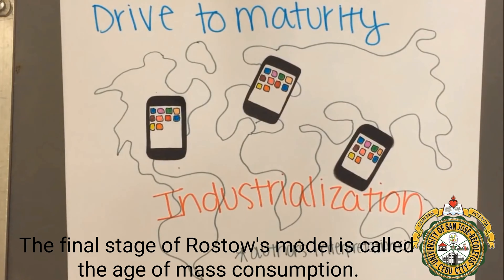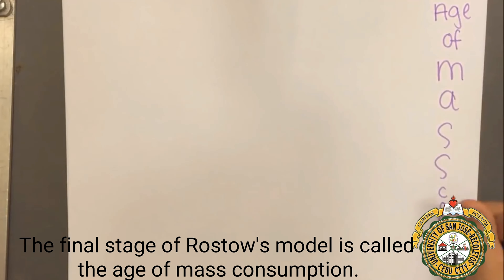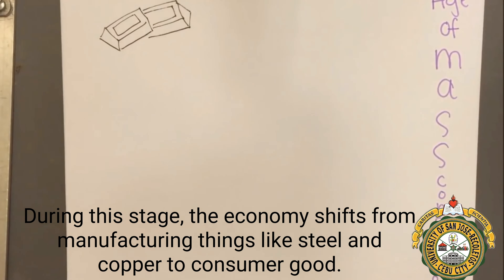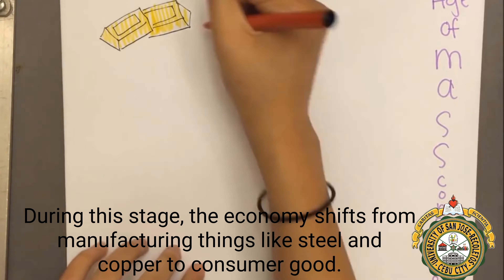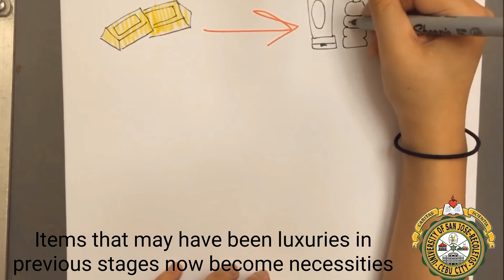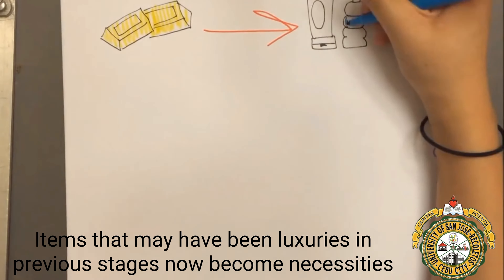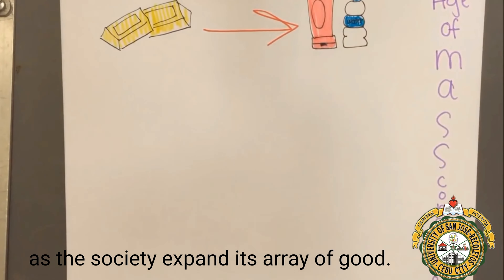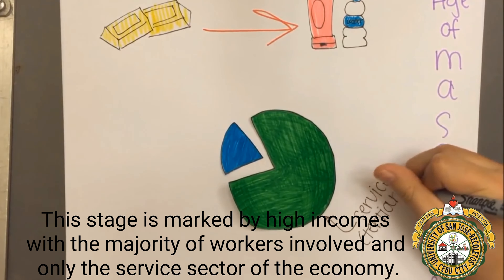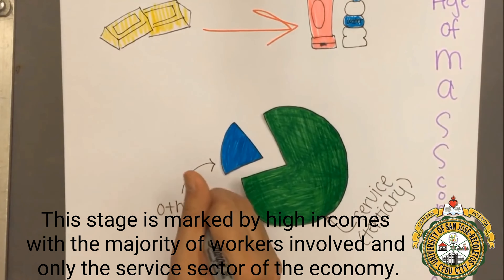The final stage in Rostow's model is called the Age of Mass Consumption. During this stage, the economy shifts from manufacturing things like steel and copper to consumer goods. Items that may have been luxuries in previous stages now become necessities as the society expands its array of goods. This stage is marked by high incomes, with the majority of workers involved in only the service sector of the economy.